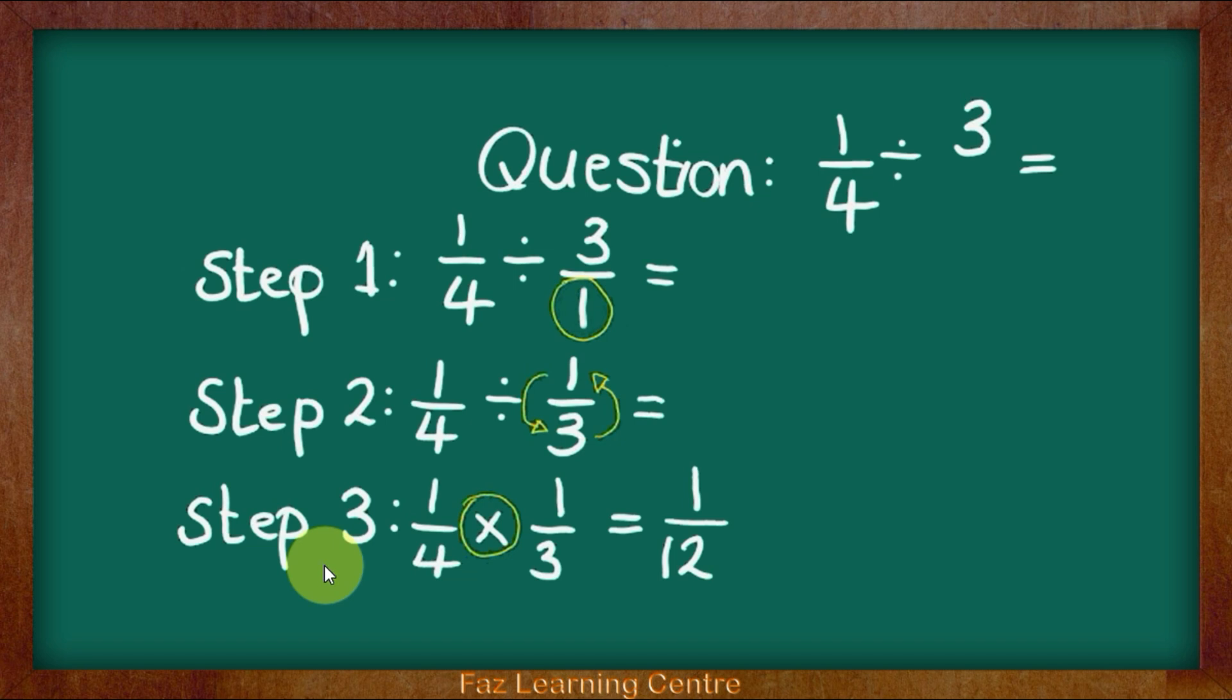Just to recap: Step 1 is to change the whole number into a fraction by adding a 1. Step 2 is to flip them around, so the denominator goes over to the numerator and the numerator goes down to the denominator. And Step 3 is changing the division sign to multiplication.